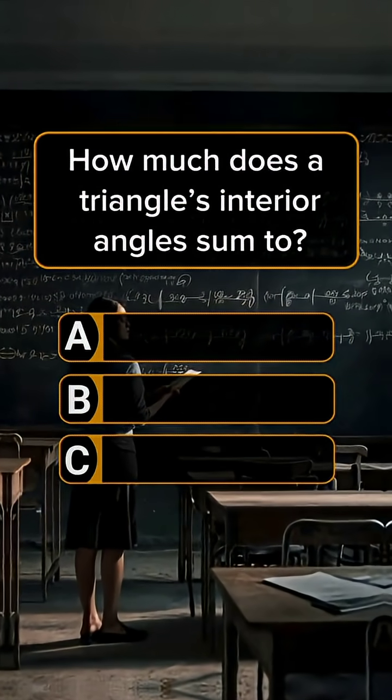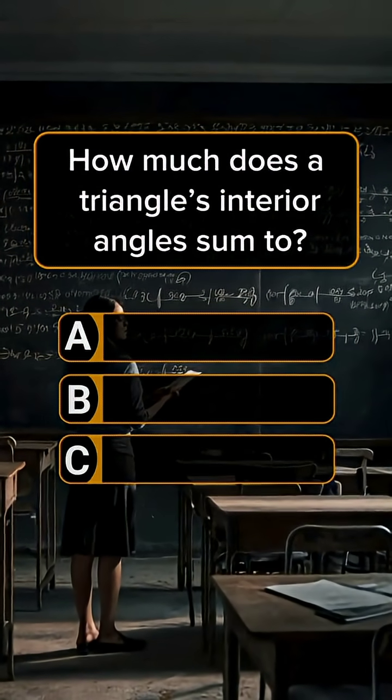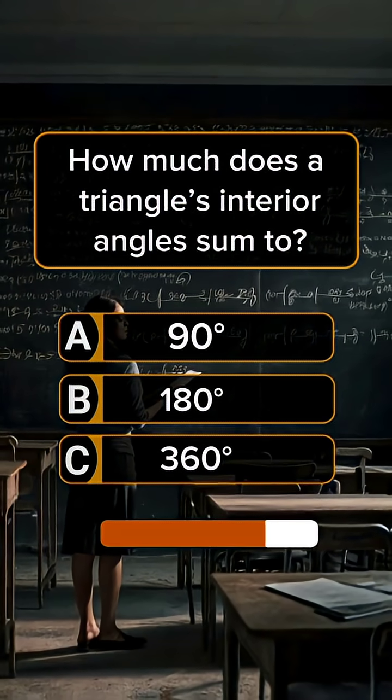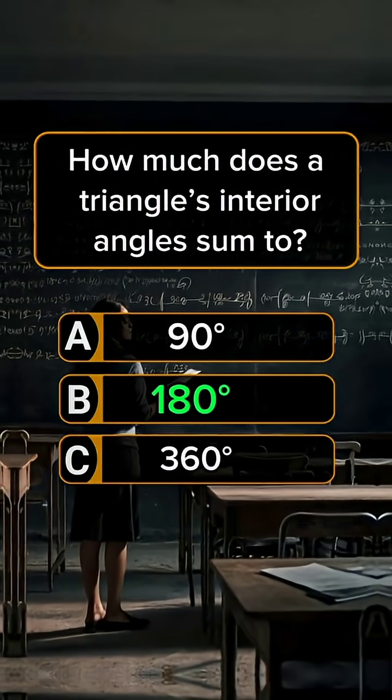Question 2. How much does a triangle's interior angles sum to? Answer B, 180 degrees.